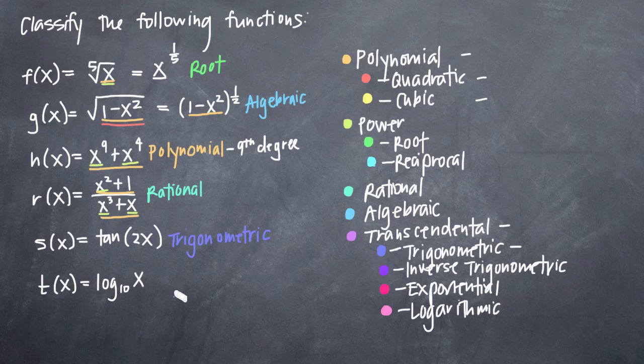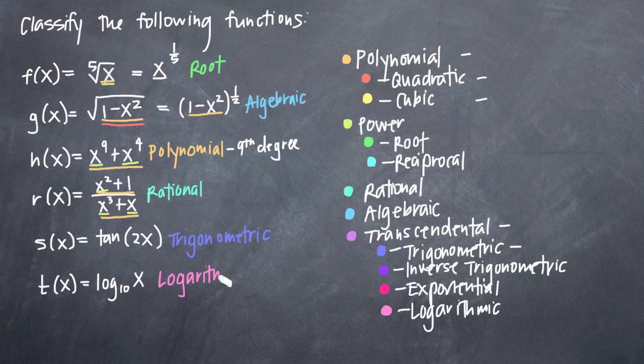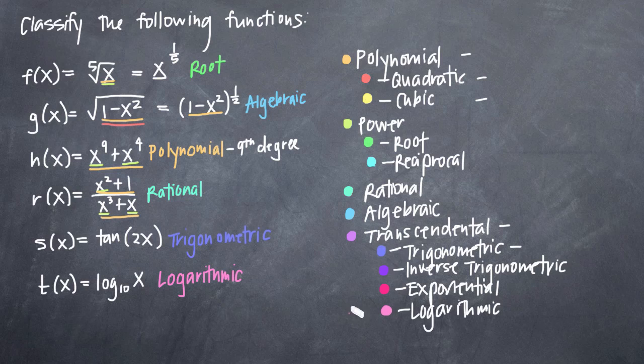Similarly here for our function t of x, we know that we have a logarithmic function because we see that we have log base 10. Whenever you see log or ln for natural log, you know that you have a logarithmic function. And again, logarithmic functions are part of the transcendental family of functions. But as always, we want to be as specific as we can and call it a logarithmic function, which is more specific than calling it a transcendental function. And that's it! That's a basic overview for how to classify functions.